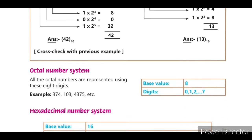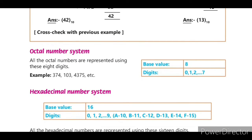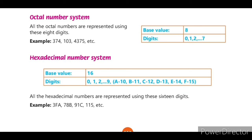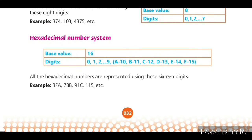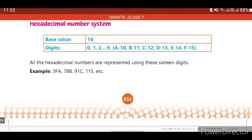The octal number system has base value 8 and digits from 0 to 7. The hexadecimal number system has base value 16, with numerical digits from 0 to 9 and alphabets A to F representing 10 to 15 respectively.